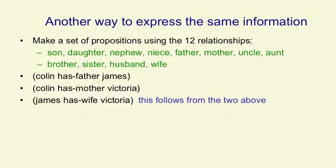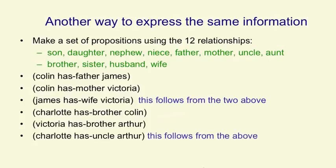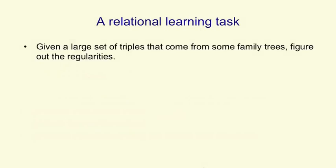And in the nice simple families depicted in the diagram, the third proposition follows from the previous two. Similarly, the third proposition in the next set follows from the previous two. So the relational learning task, that is, the task of learning the information in those family trees, can be viewed as figuring out the regularities in a large set of triples that express the information in those trees.